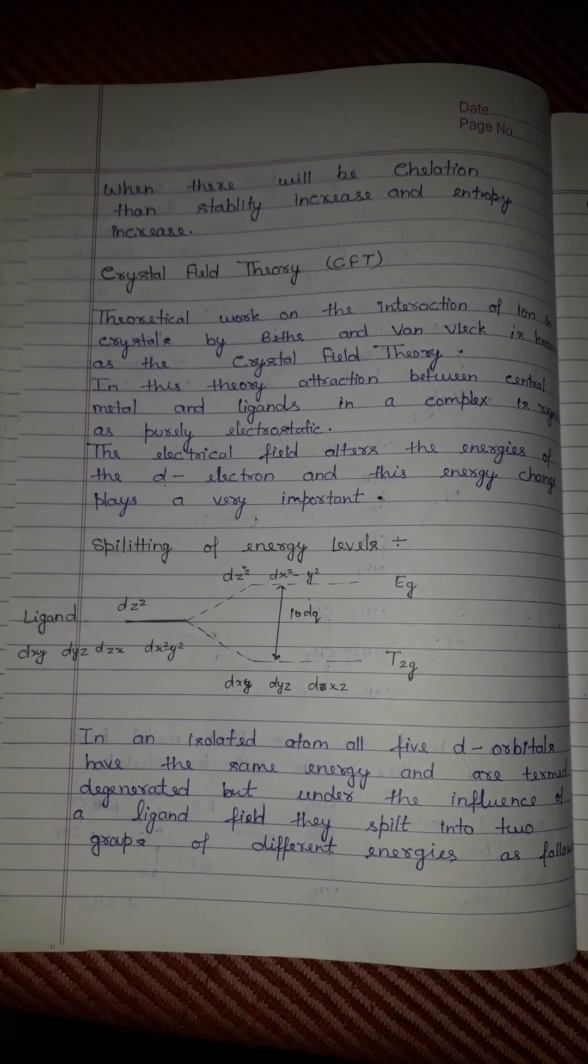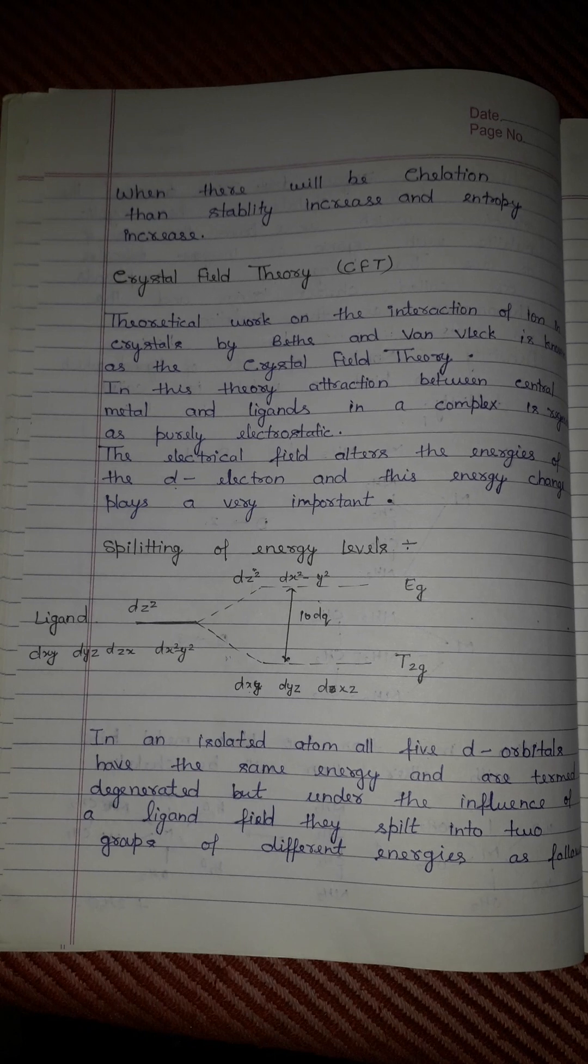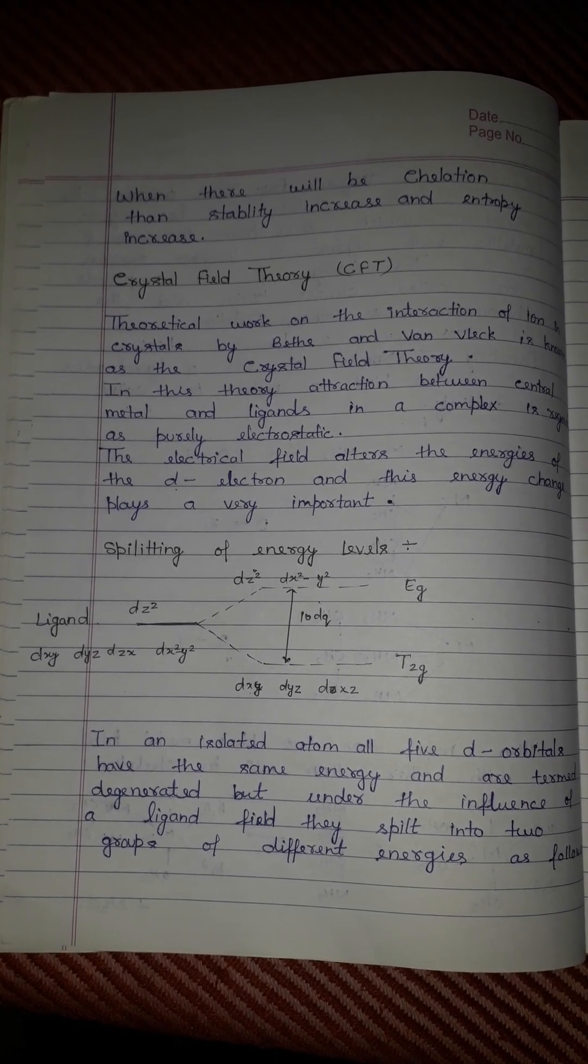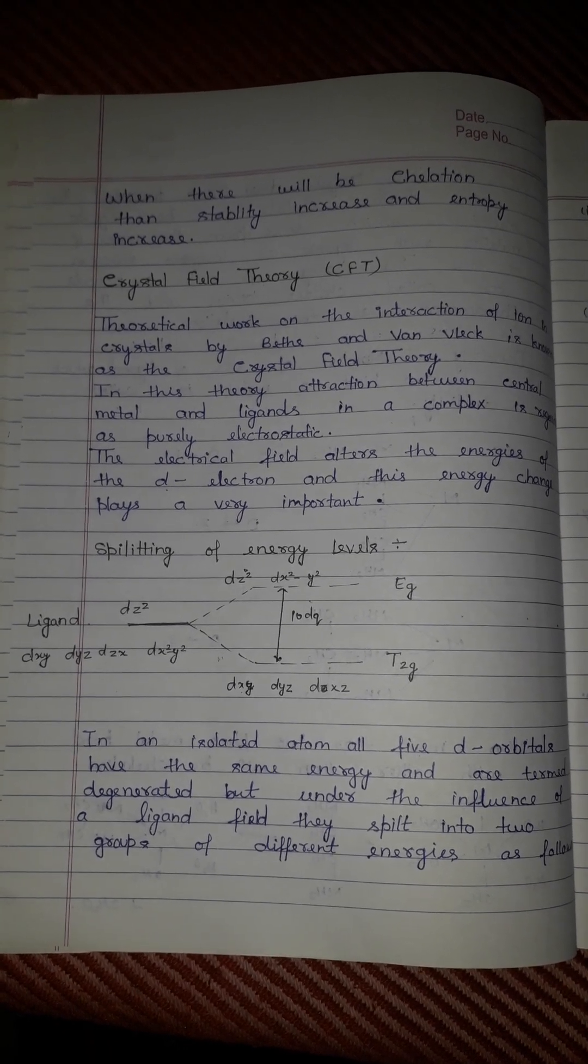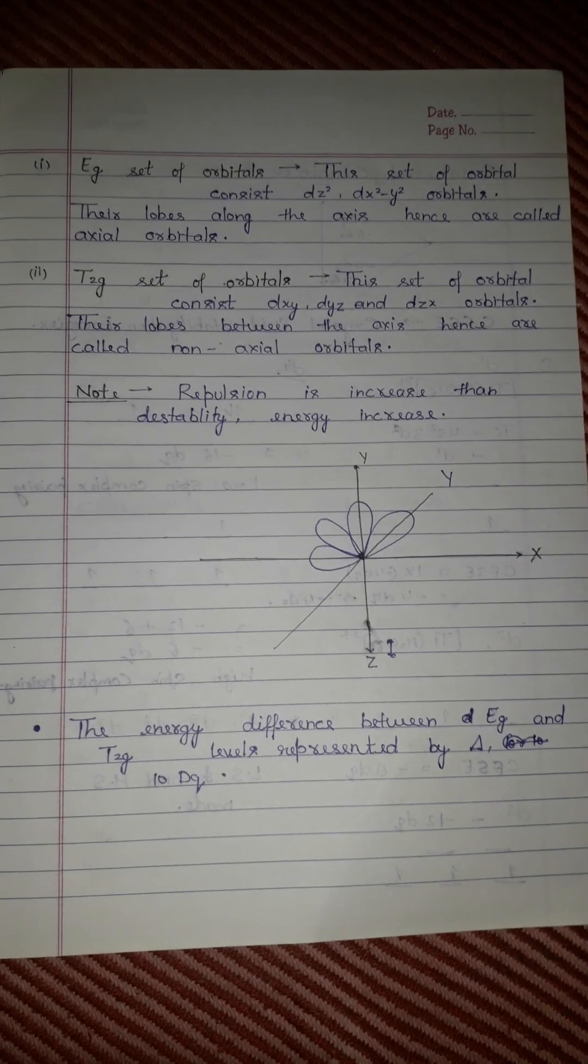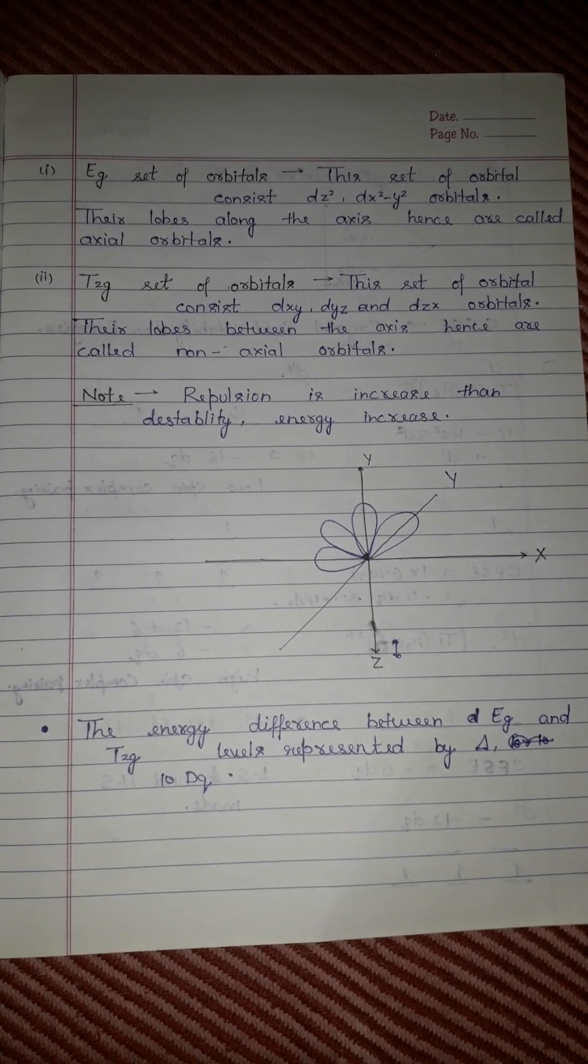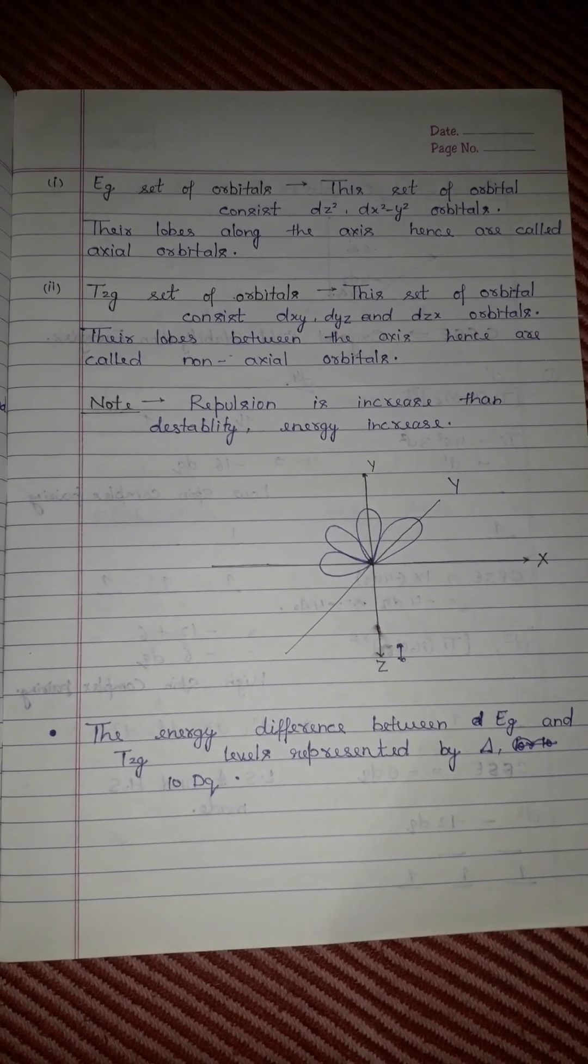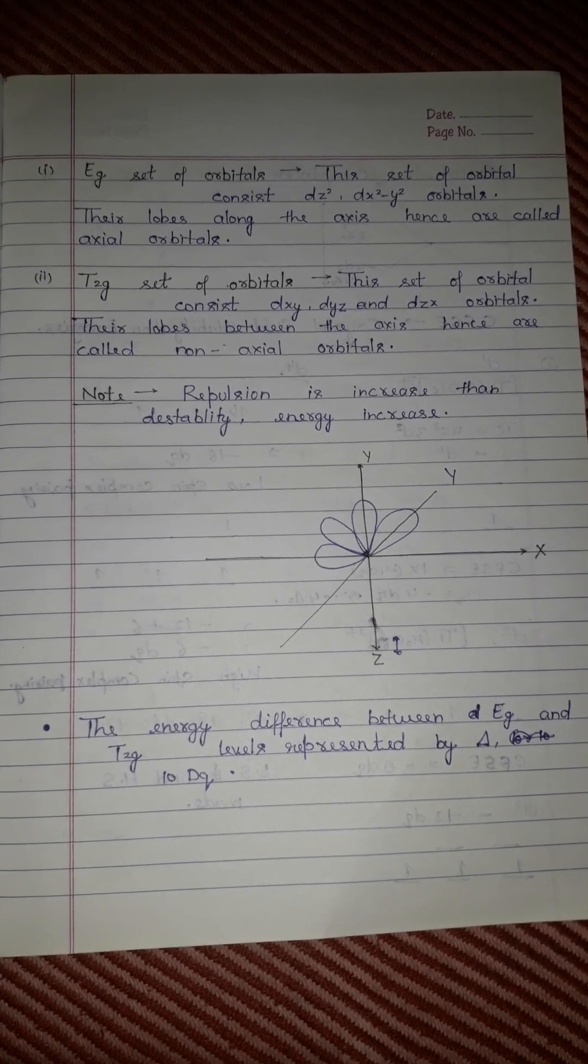The electrical field alters the energy of the d electrons, causing an important splitting of energy levels. The eg set of orbitals consists of dz² and dx²-y² orbitals. Their lobes lie along the axes and are called axial orbitals.